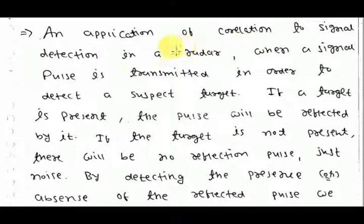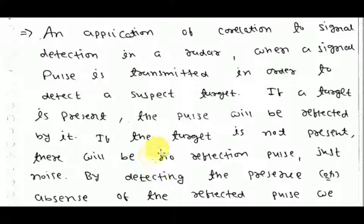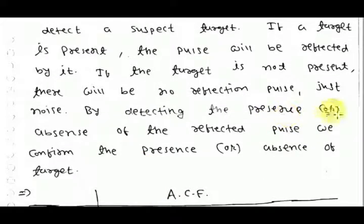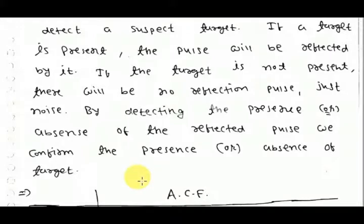The application of correlation is signal detection in radar. When a signal pulse is transmitted to detect a target in space, if a target is present, the pulse will be reflected by it. If the target is not present, there will be no reflection — just noise. By detecting the presence or absence of the reflected pulse, we confirm the presence or absence of the target. We transmit one pulse, and after some delay tau, a reflected pulse will come. We measure the correlation function — if it is non-zero, there is a target; if it is zero or very small due to noise, there is no target.